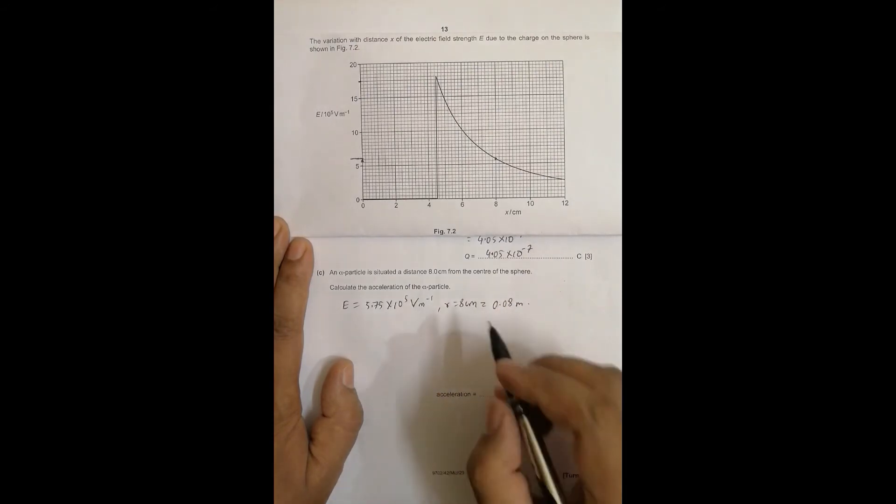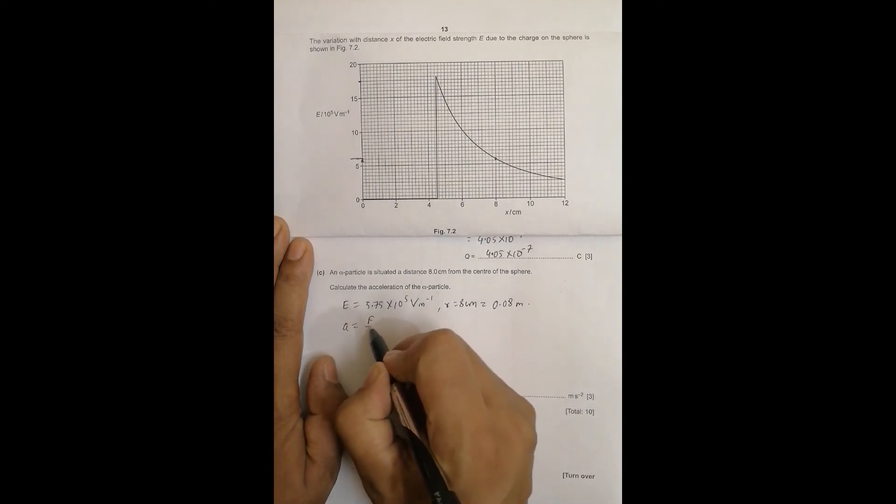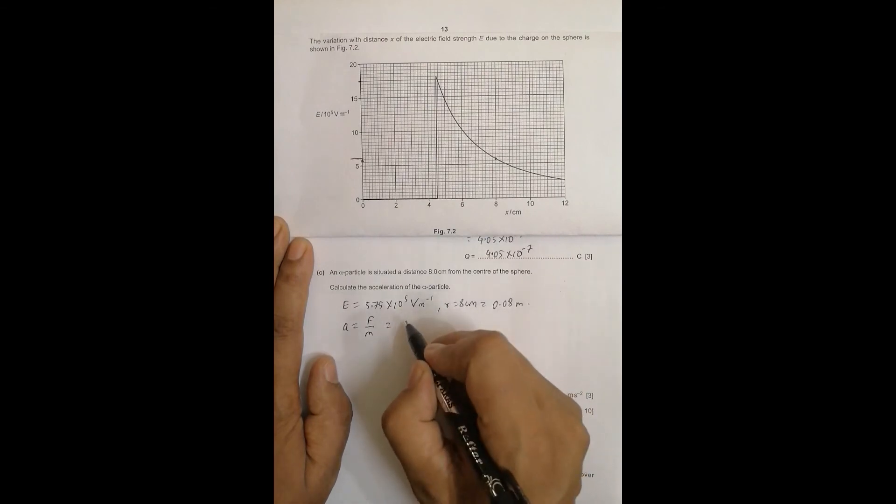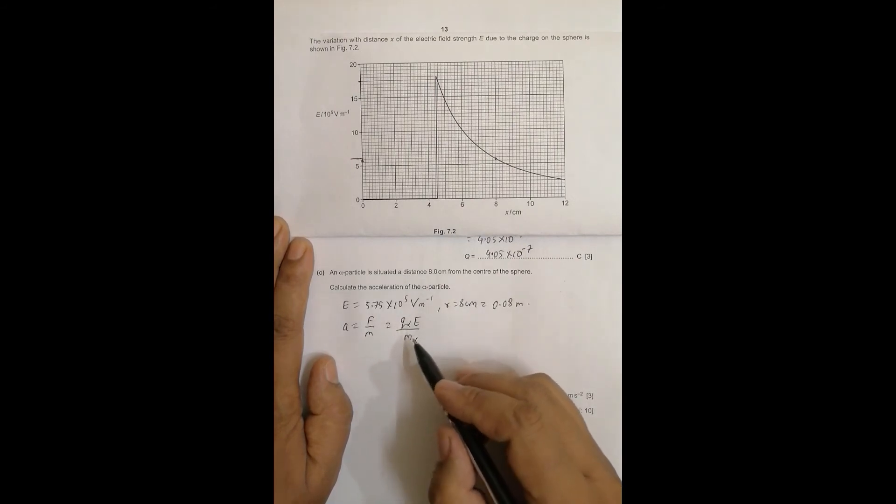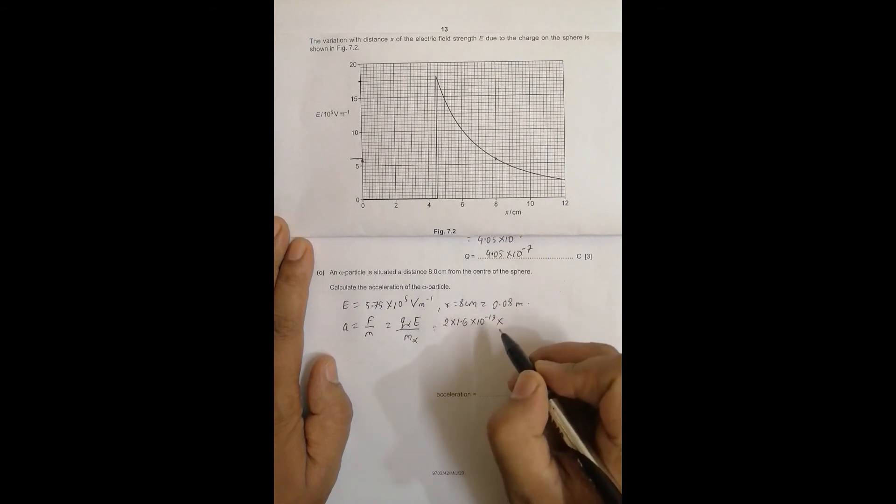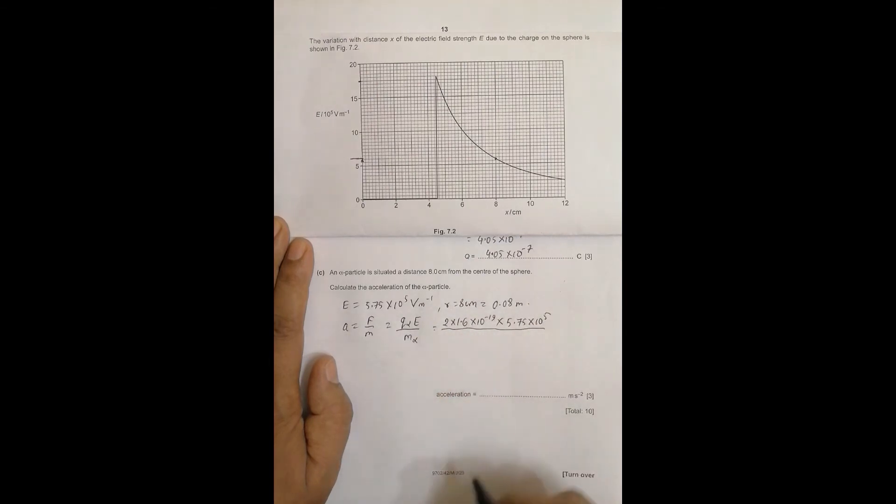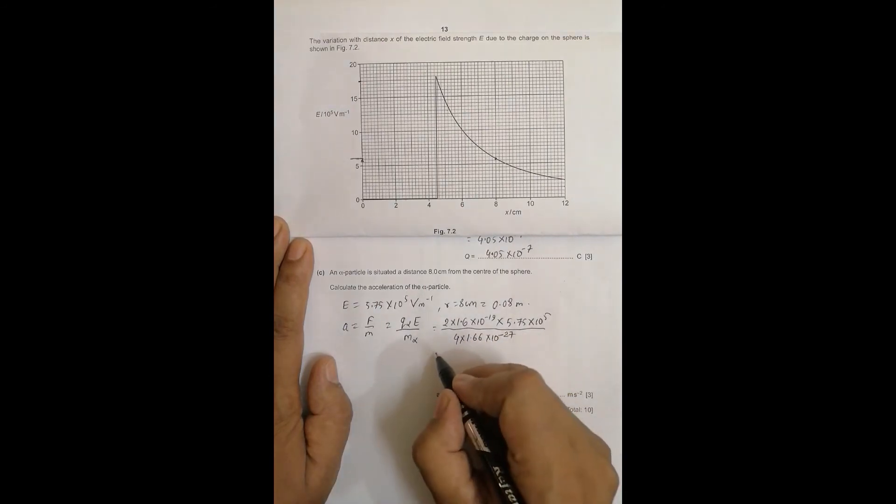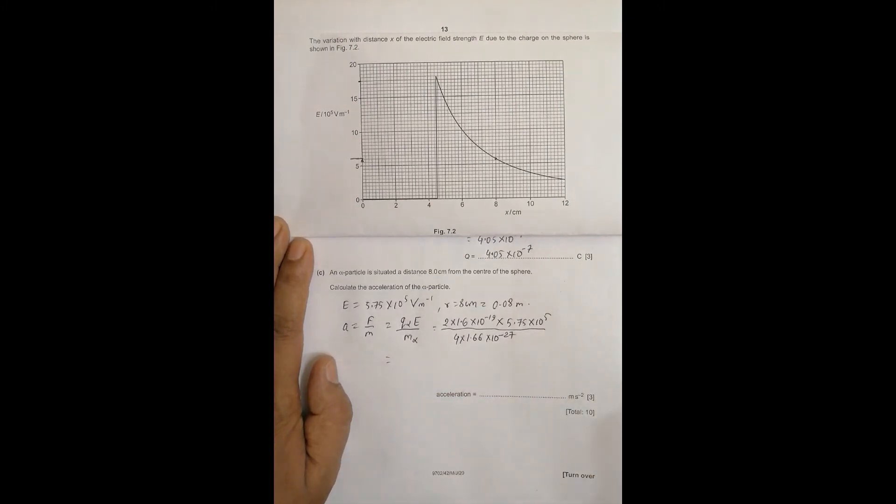We have to find A, so A is equal to the force divided by mass. The force is equal to charge of alpha particle into E divided by mass of the alpha particle. Charge of alpha is 2 into 1.6 into 10 to power minus 19 into E which is 5.75 into 10 to the power 5, whole divided by mass of alpha particle equal to 4 into 1.66 into 10 to the power minus 27 from the data page.